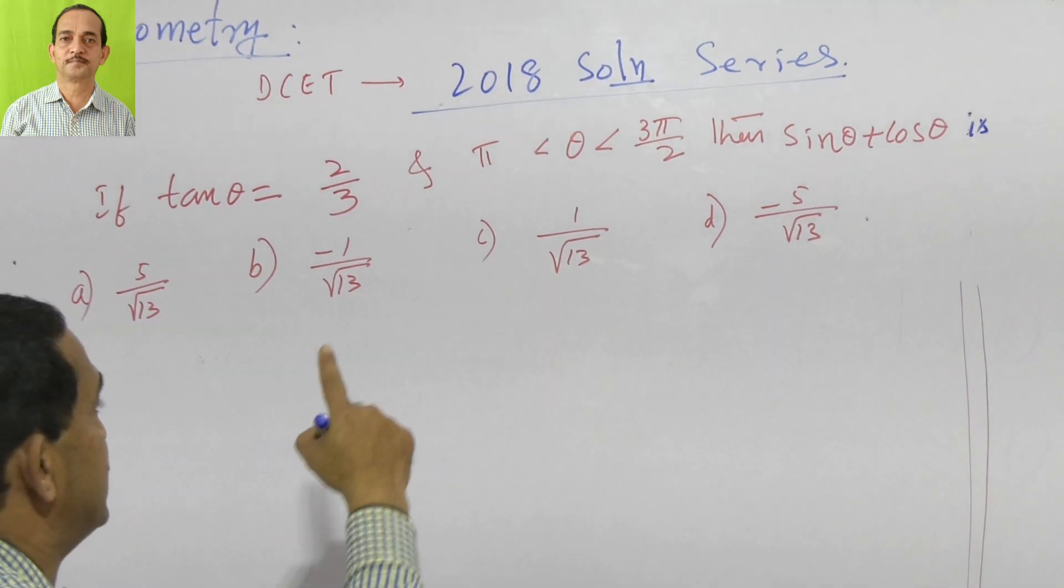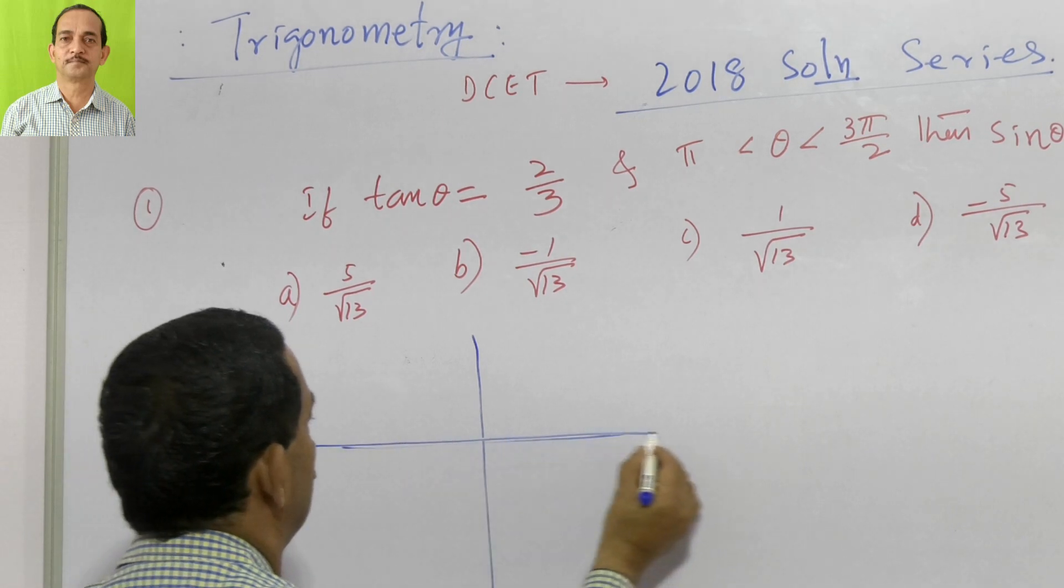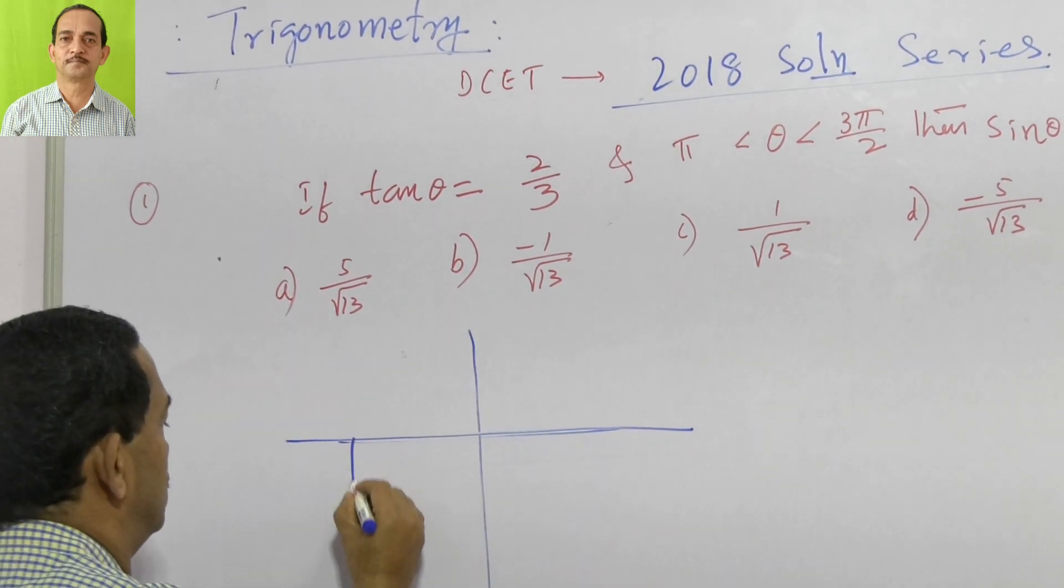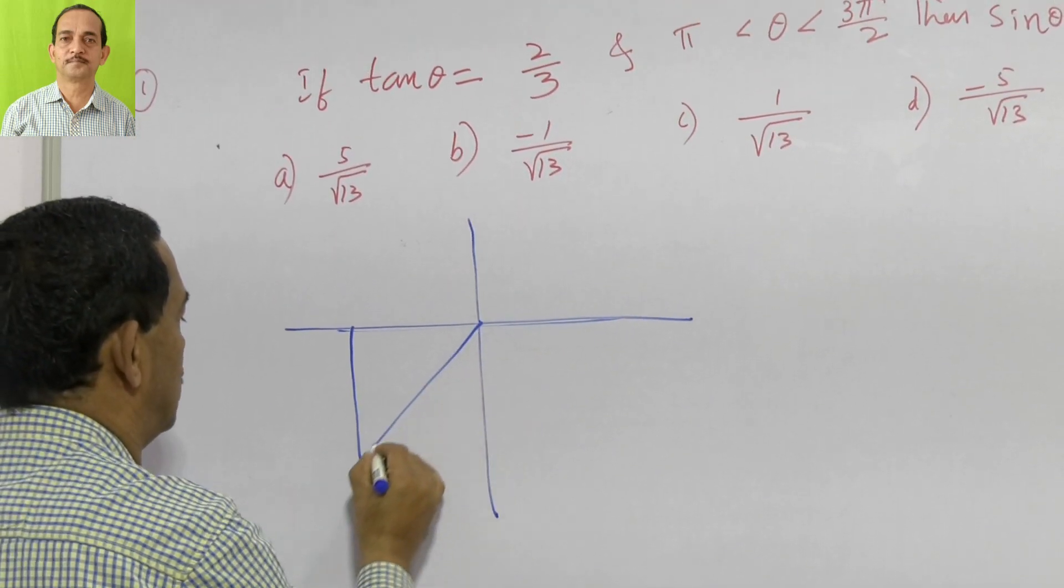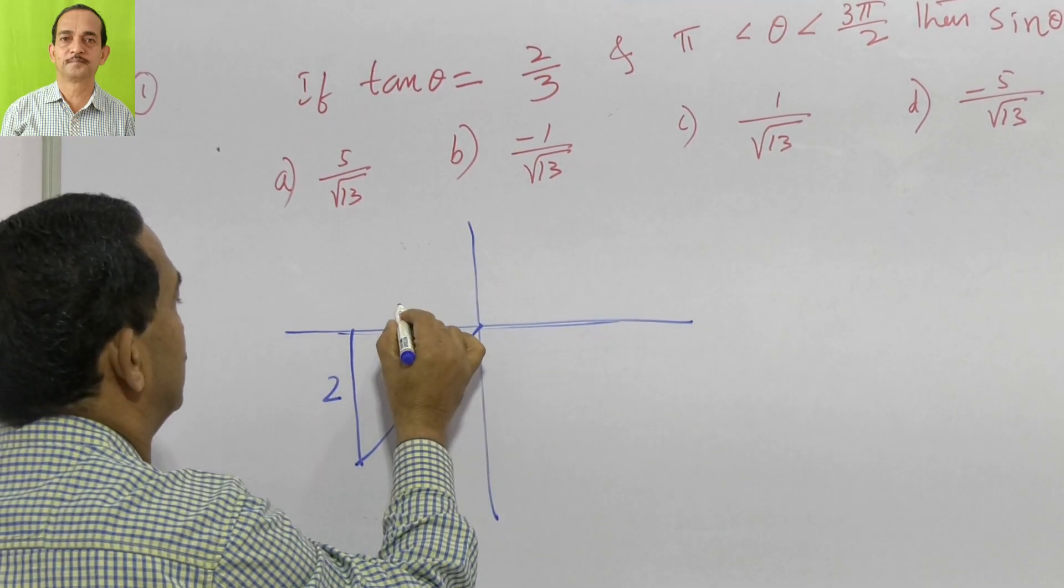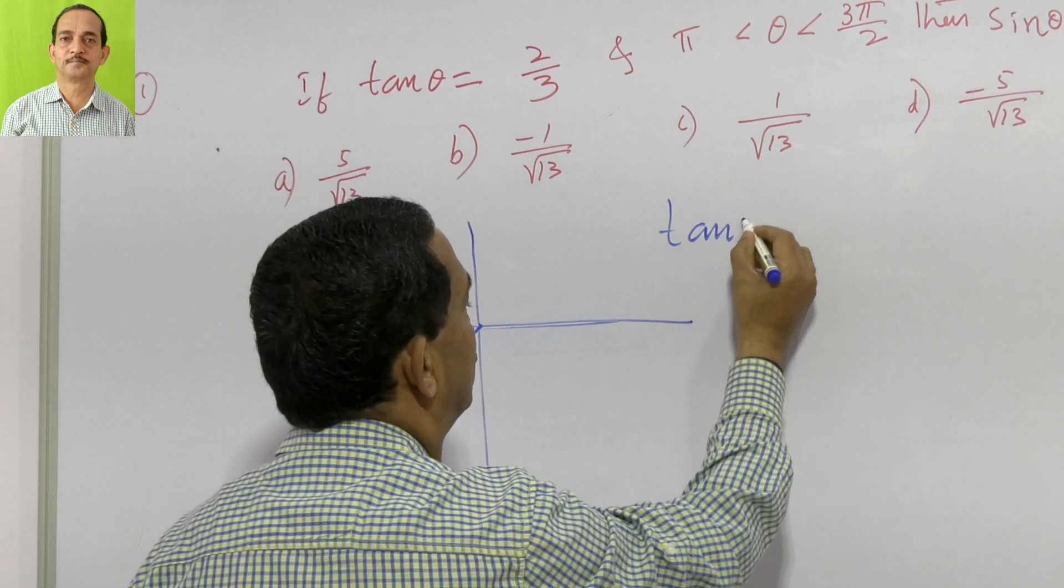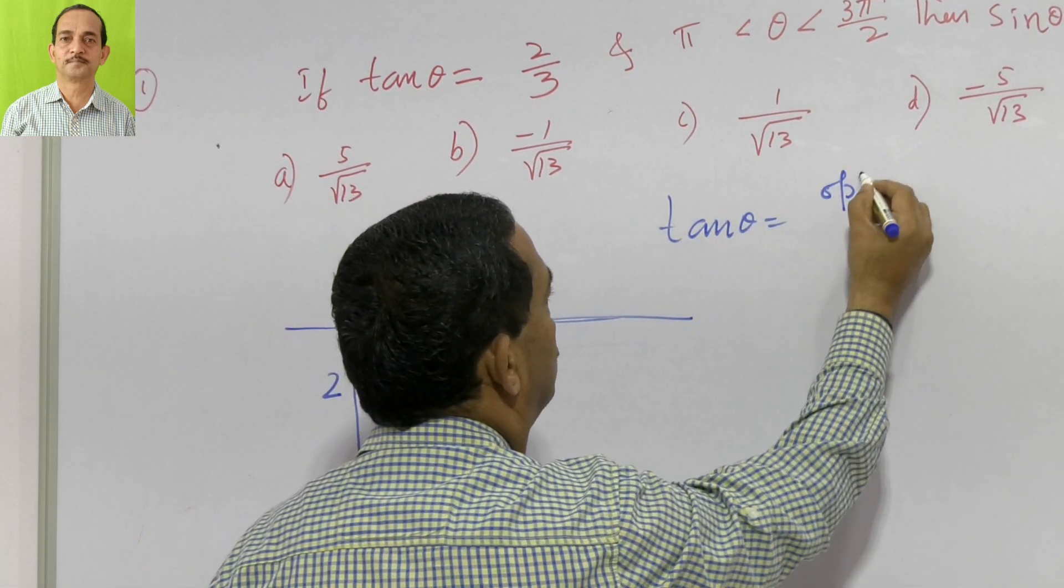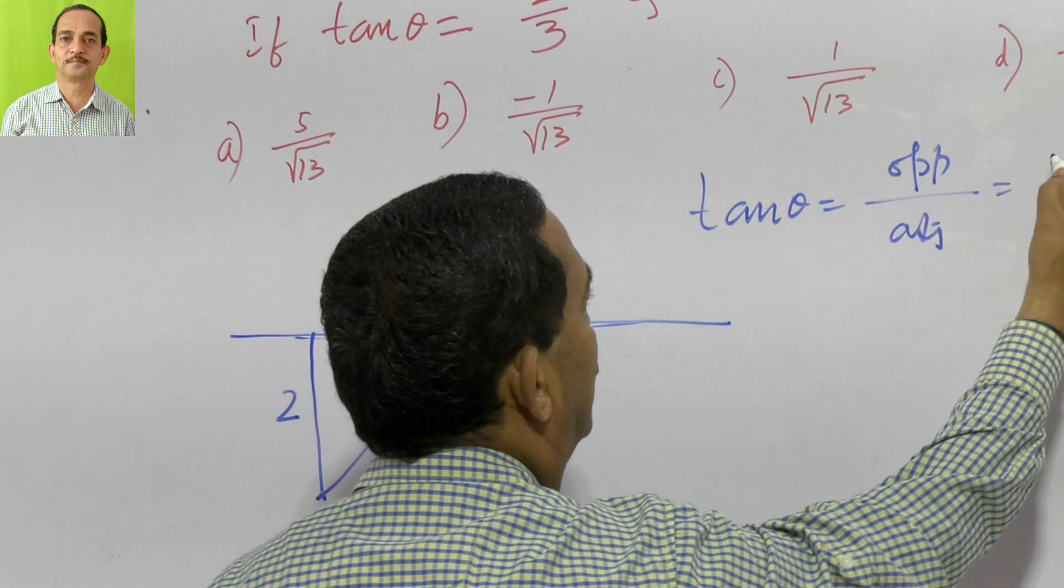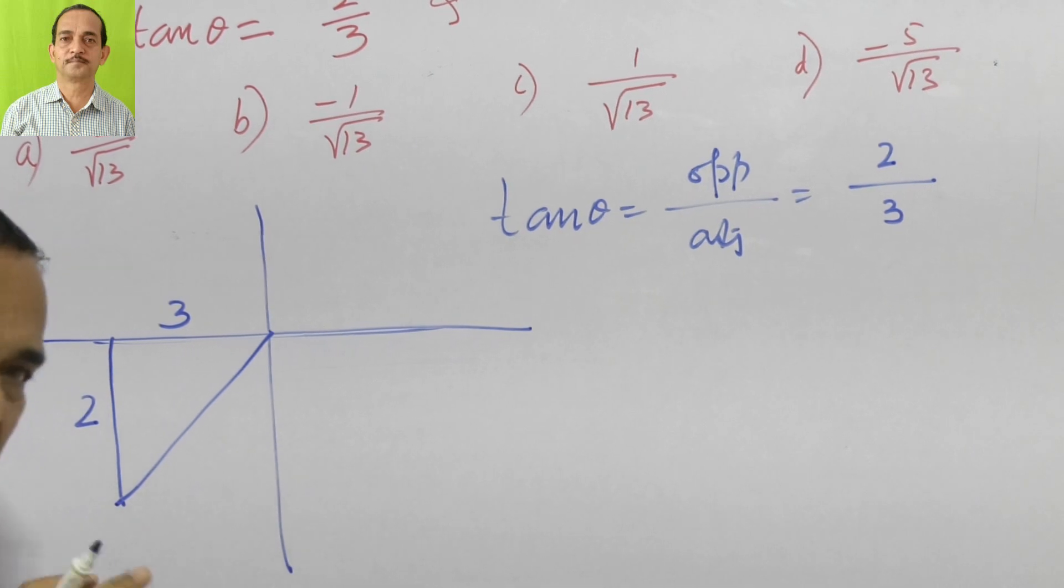When it lies in the third quadrant, as we know, see this line. He has given in the third quadrant, opposite side is 2 and adjacent side is 3, because we know the value of tan theta is opposite side by adjacent side. Opposite side is 2 and adjacent side is 3.